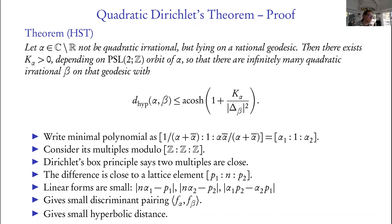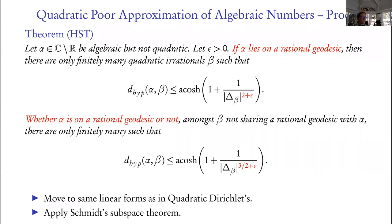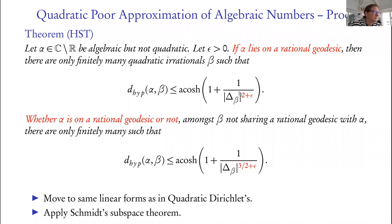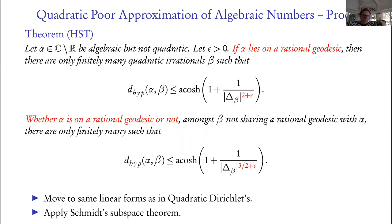Then you can ask about algebraic numbers being poorly approximable — a Roth-type result. Take α which is algebraic but not quadratic. If it lies on a rational geodesic, we just found infinitely many approximations with exponent 2, but if we go to 2+ε we find only finitely many — just as in Roth's theorem the approximation breaks if you go any larger than 2. Whether you're on a rational geodesic or not, if you ask for approximations not from your own geodesic, you find a similar statement but with exponent 3/2: only finitely many of those nearby-geodesic approximations.